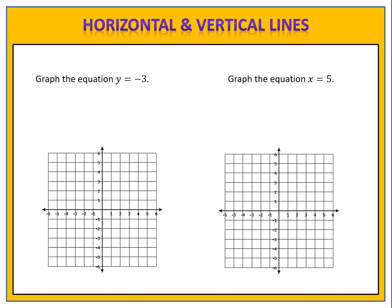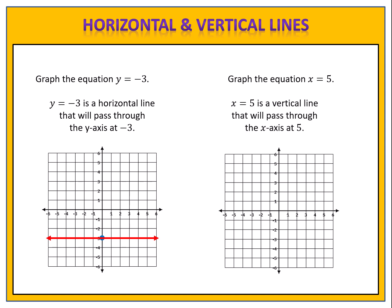Here are a couple of examples for you to try. The equation y equals negative 3 is a horizontal line that passes through the y-axis at negative 3. We plot the point and draw the horizontal line — don't forget the arrows at the end to indicate the graph continues endlessly in both directions. For x equals 5, we plot the point at 5 on the x-axis and sketch the vertical line through it, again with arrows on both ends.